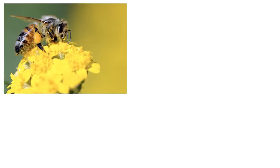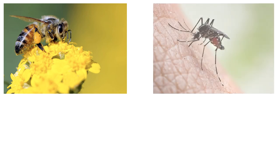For a mutualistic relationship, we have the honeybee — Apis mellifera — pollinating a flower. The bee gets nectar and pollen to energize itself, its colony, and its brood, and the flower gets pollinated, which is how it reproduces. Both benefit — that's a mutualistic relationship.